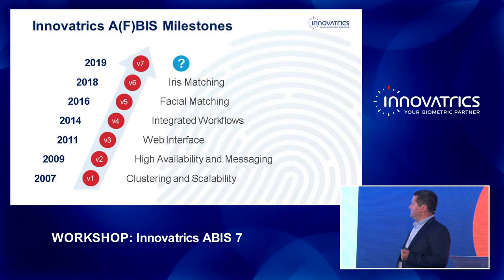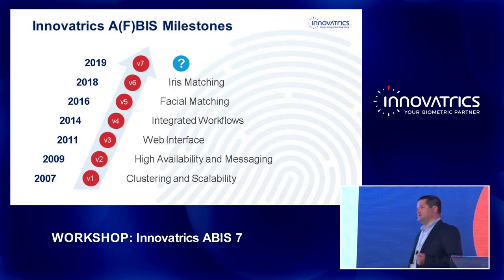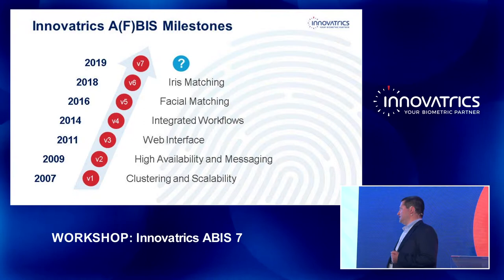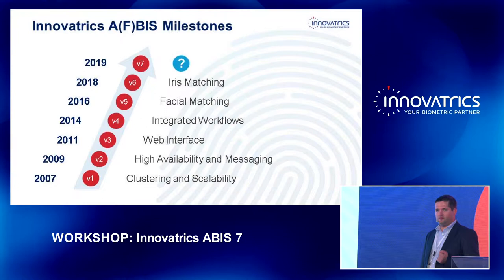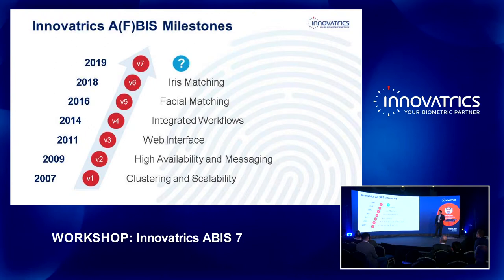How did it all start? The company was founded in 2004. The first ABIS version 1 was created in 2007 — I think it was for driving license registration, because we started with civil AFIS and it was mostly about fingerprint. We introduced clustering and scalability, because that was the first requirement when we wanted to manage higher volume and deploy across multiple servers.